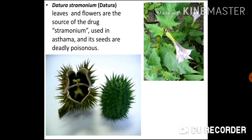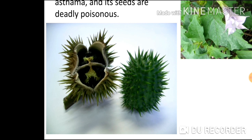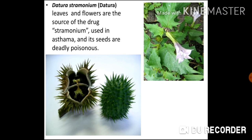The next medicinal plant is Datura stramonium, commonly called datura. Leaves and flowers are the source of the drug stramonium, used in treating asthma — a respiratory condition causing difficulty in breathing. The seeds are deadly poisonous. The fruit of datura is a septicidal capsule.